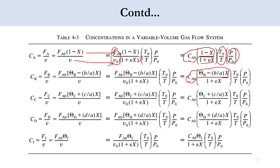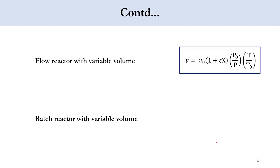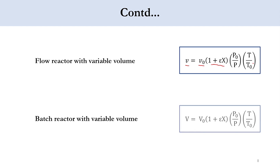That's how concentration terms are defined in the gas phase system. For a flow reactor with variable volumetric flow rate, v equals v0 times (1 + epsilon X) times (P0/P) times (T/T0). Similarly, for a batch reactor with variable volume, V equals V0 times (1 + epsilon X) times (P0/P) times (T/T0), and the derivation follows the same lines as shown in this lecture.